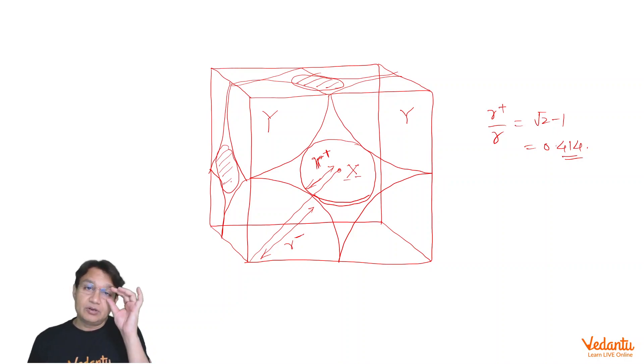So let's find out what the packing fraction is in this case. Packing fraction in this case should be number of Y atoms, they are of course 1, number of X atoms are 6 into half equals 3. So total volume occupied by X and Y is 4 by 3 pi R- cubed.